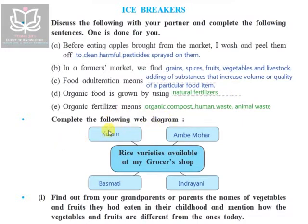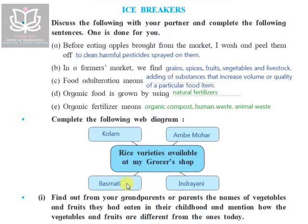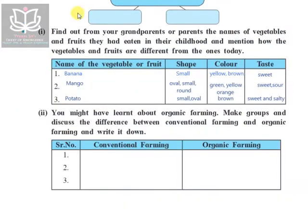Next, complete the web diagram: rice varieties available at the grocer's shop. Some types of varieties include Kolam, Ambe Mohr, Indirayan, and Basmati. Let us now discuss the next question.